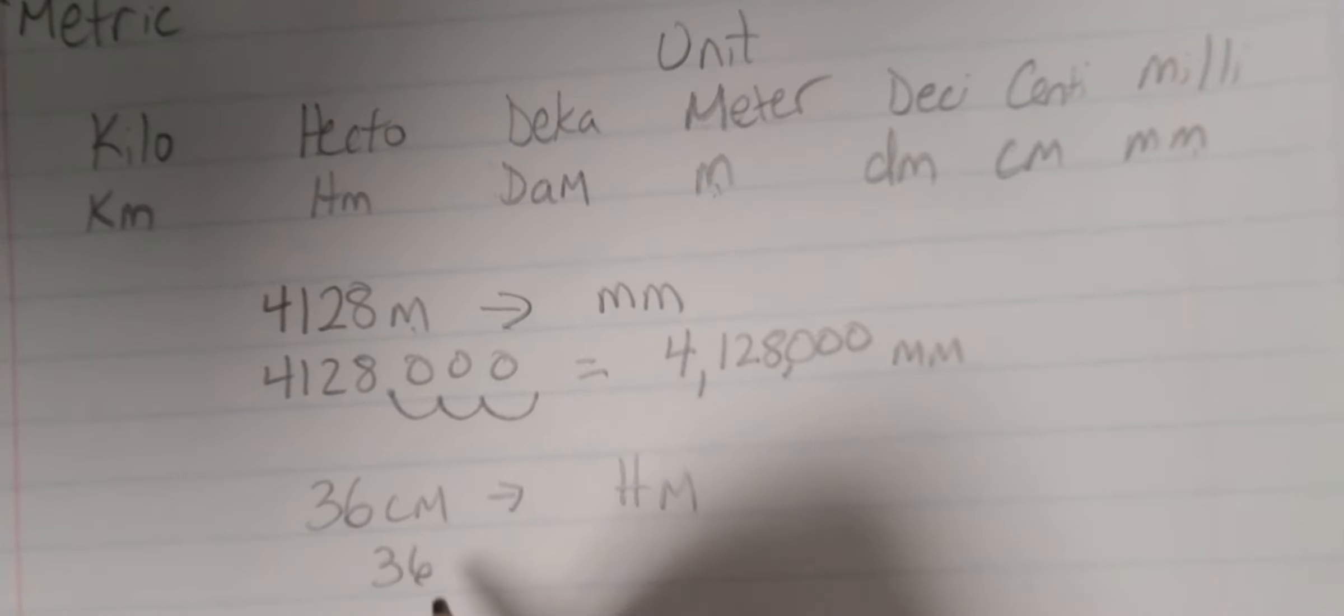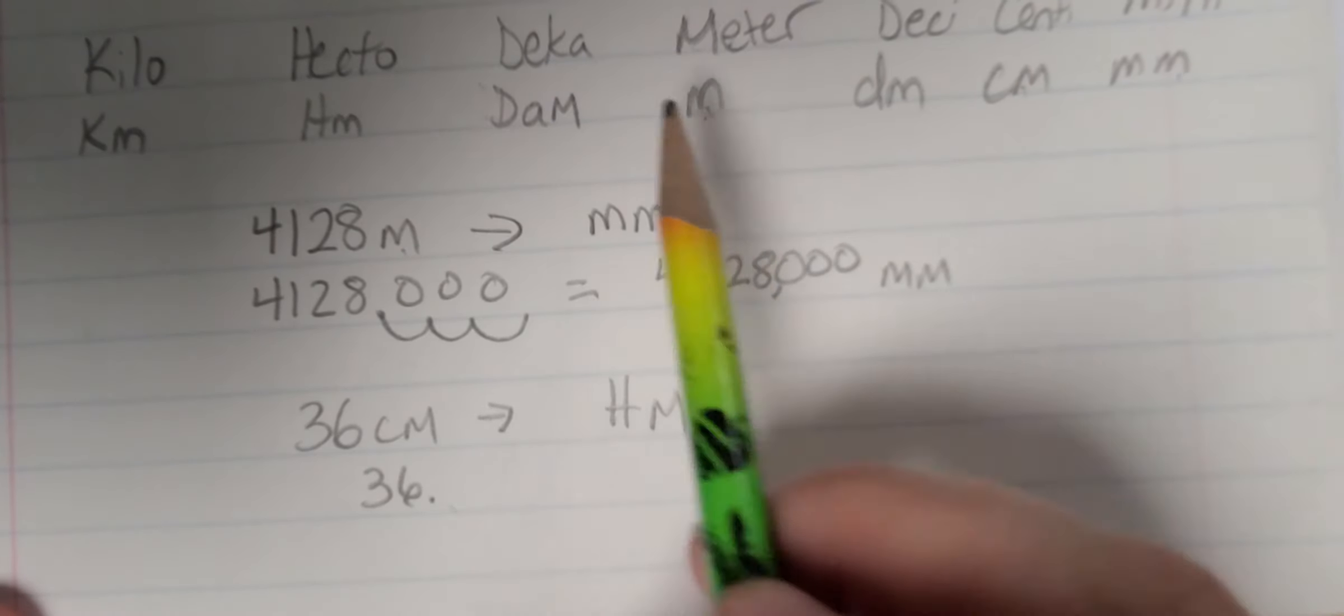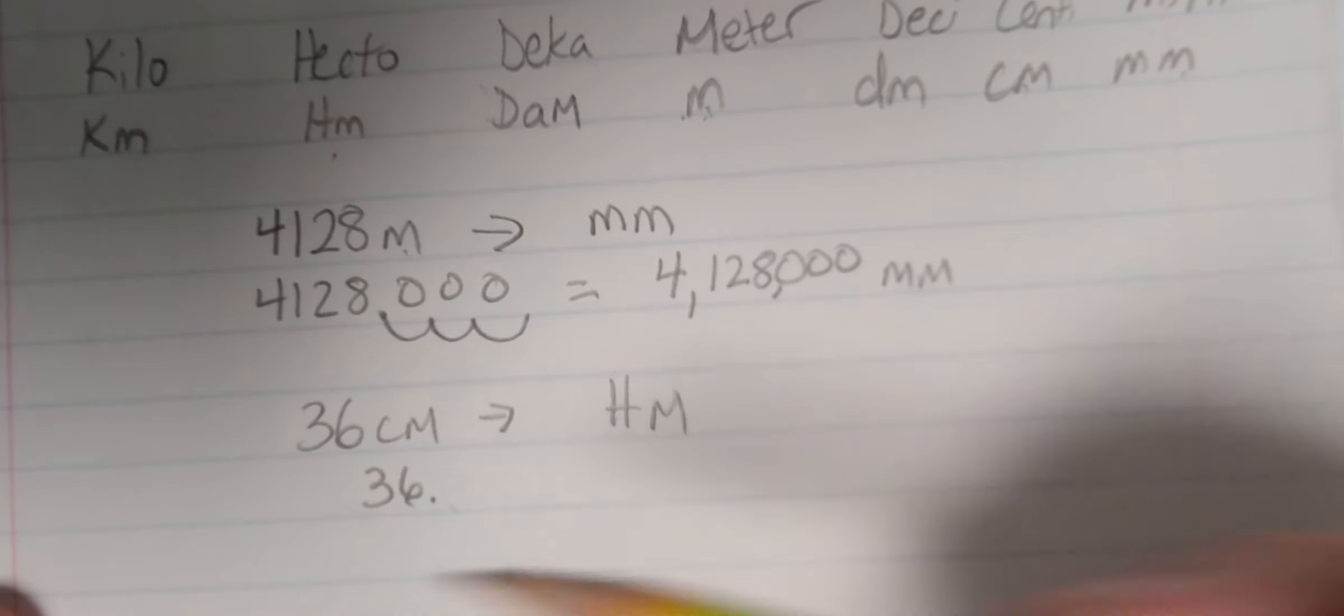and now I go and count. So I go from centi, so I go 1, 2, 3, 4 to the left.